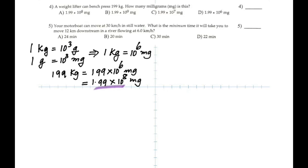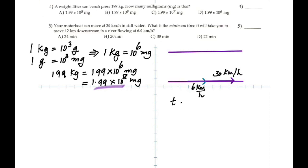Number 5: your motorboat can move at 30 km/h in still water. What is the minimum time to travel 12 km downstream in a river flowing at 6 km/h? Going downstream, the resultant velocity is 30 + 6 = 36 km/h because both move in the same direction. If it were upstream it would be 24 km/h. This case is downstream, so those are the two vectors — simply add them up. Time = distance ÷ velocity. You get the answer in hours; multiply by 60 to get minutes.